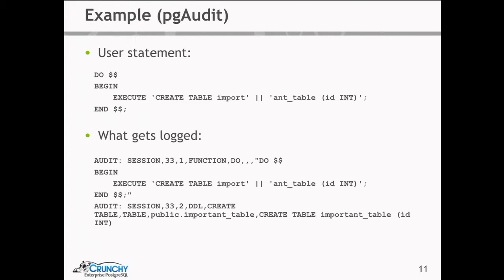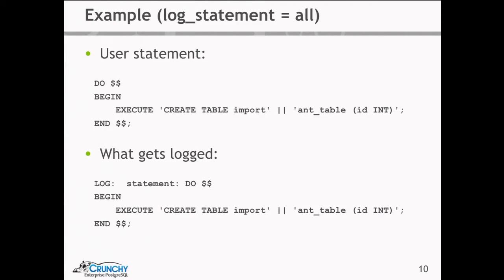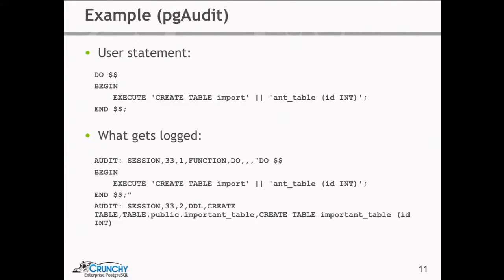It's still a session record, still statement number 33, but now we're at sub-statement two — and this is where we get to the meat of it. We've got DDL as our class, it's a create table statement, the object type is table. Here's the really good part: now we've got the 'important table', which was nicely obfuscated, and we have the fully qualified object name with the schema. And for fun, here's the actual dynamic SQL that was constructed and a whole bunch of good information telling us exactly what happened.